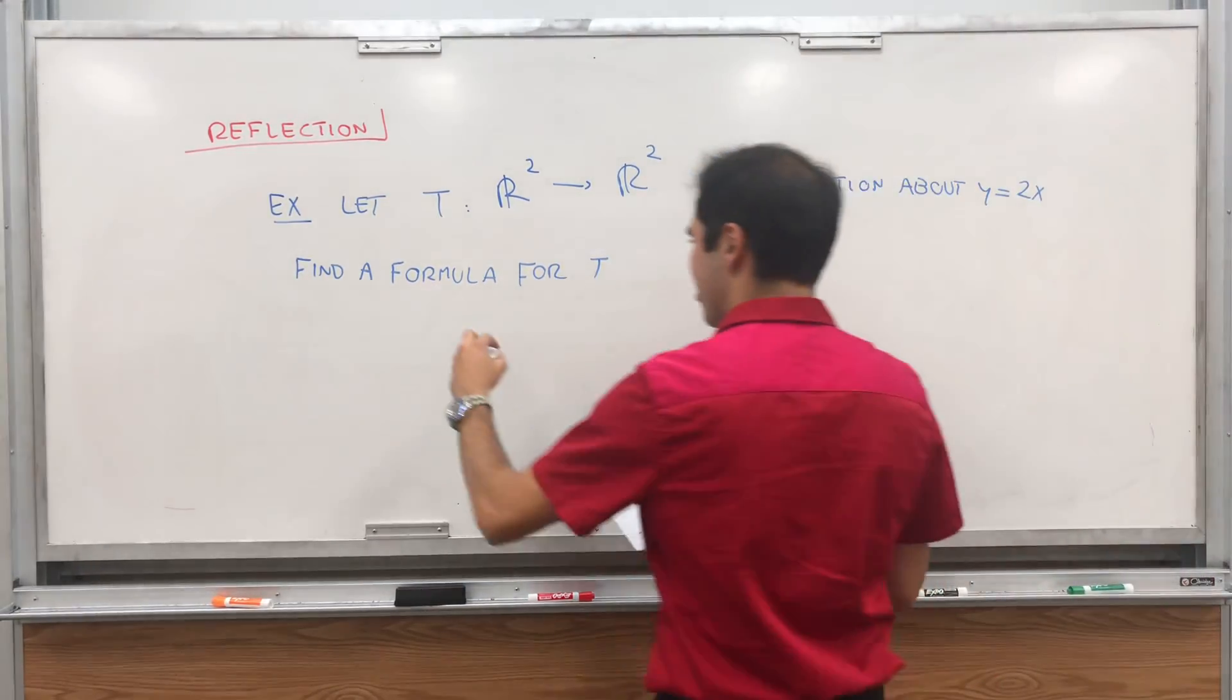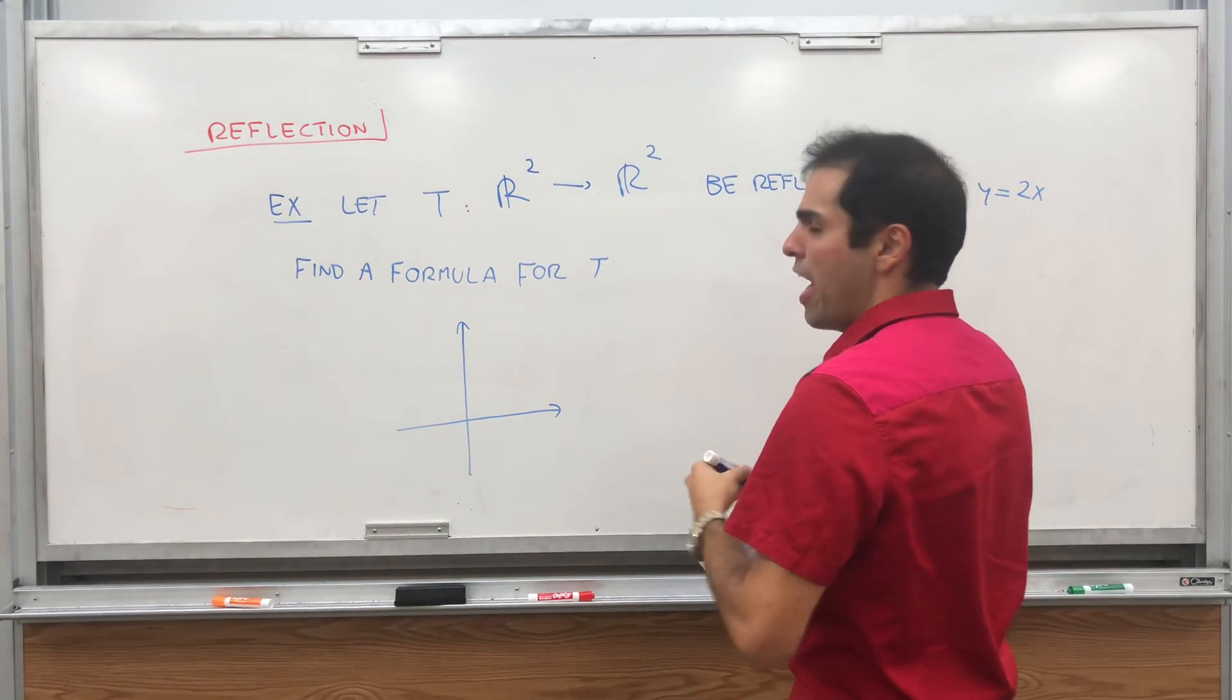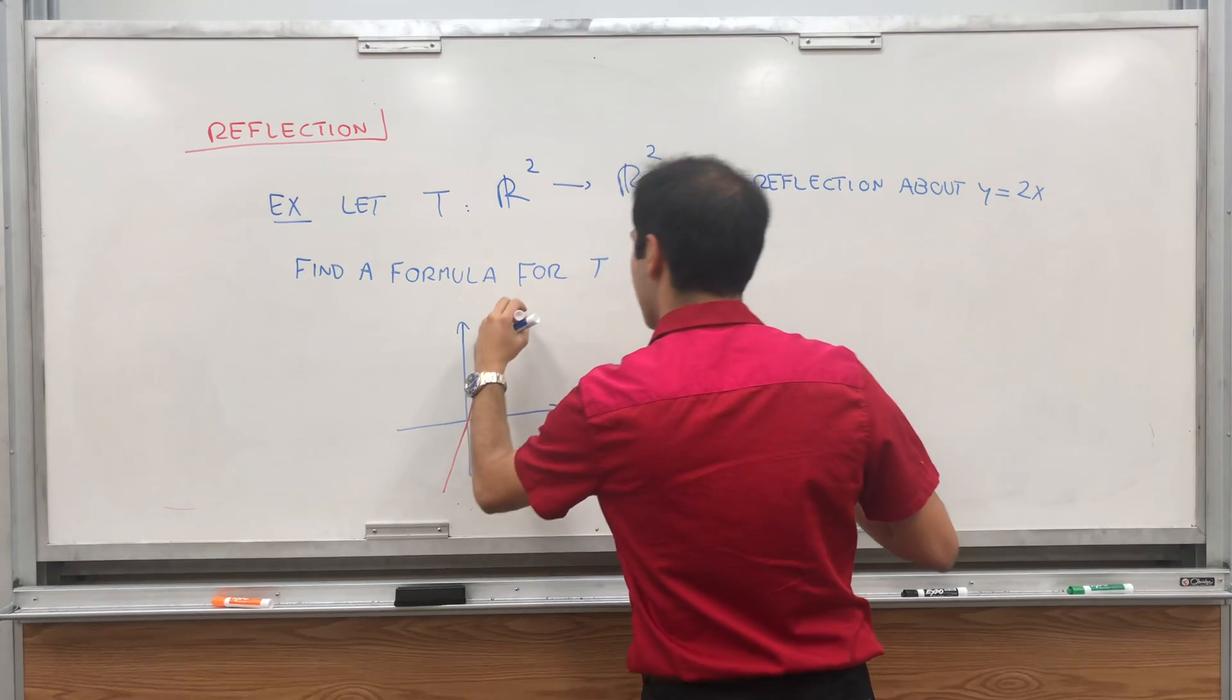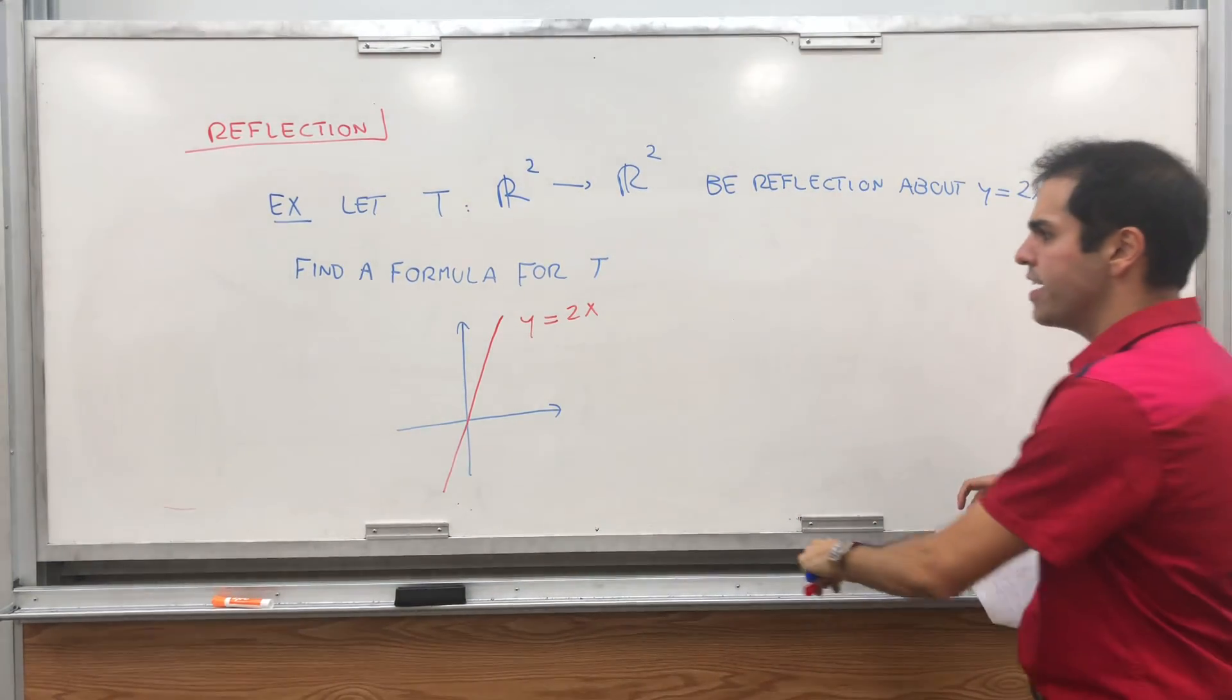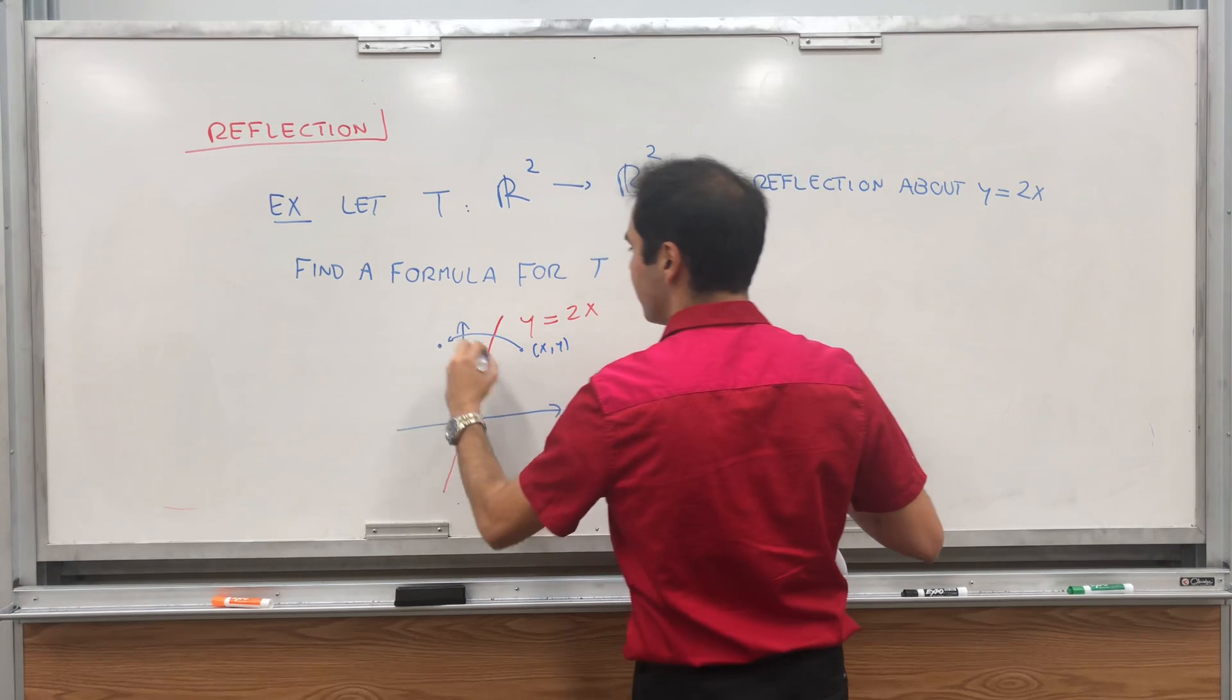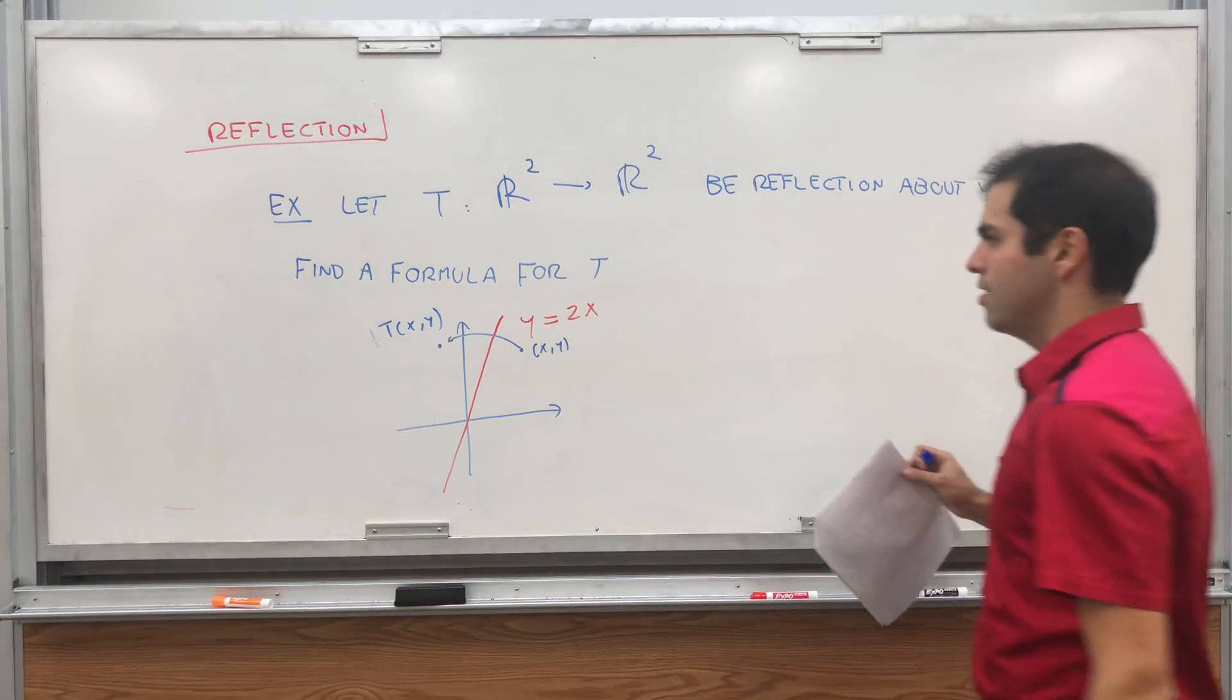Let me draw a picture of what's going on. Again, we have our x and y axis and we have that line y equals 2x, which looks something like that. And what does T do? It takes a vector x, y here and just reflects it about this line to get T of x, y.